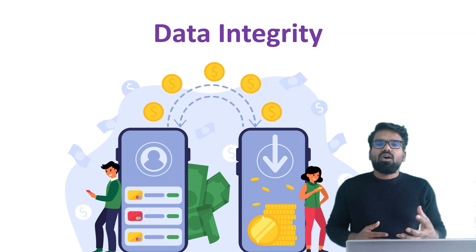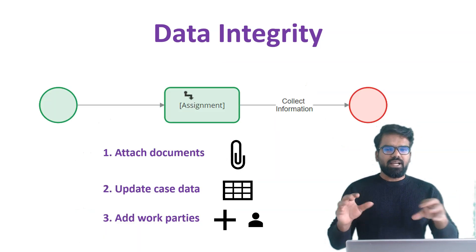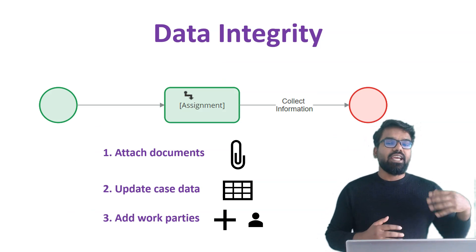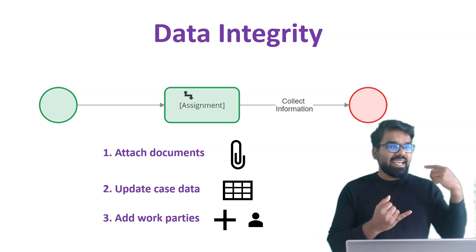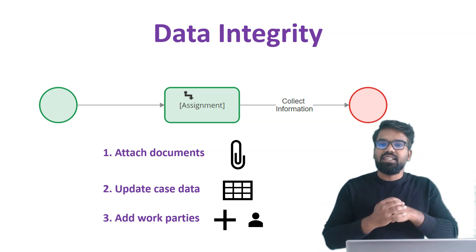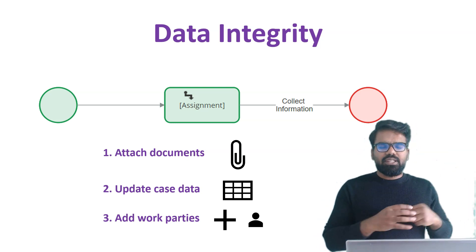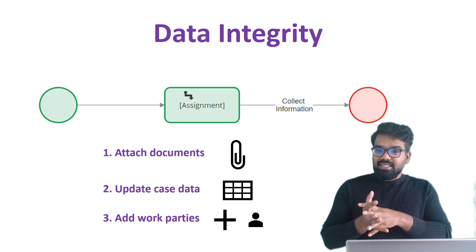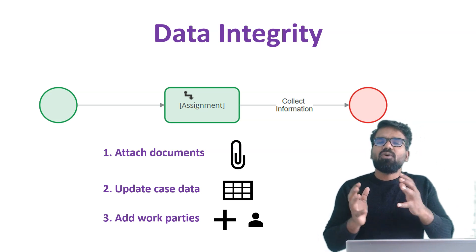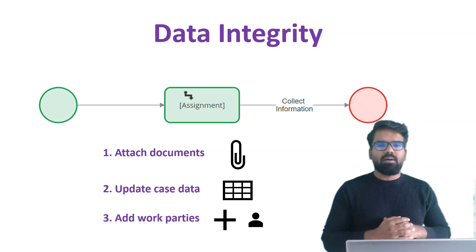So this is what we call data integrity. Now let's talk about the Pega application. Assume that in a Pega application we have an assignment, and in that assignment end users can perform different actions: they can attach documents, update properties in the form, or add work parties. Now if the end user is satisfied and wants to complete the business transaction or flow action, they go to the next screen by clicking the submit button.